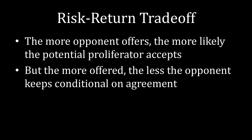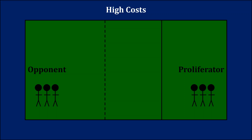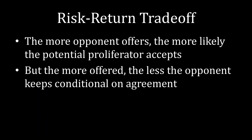But therein lies the rub. The more that the opponent offers, the less the opponent keeps conditional on an agreement. If a potential proliferator actually has high costs, then the opponent could have extracted a lot more for itself. So it's somewhat happy that at least it's getting a deal done, but it's dissatisfied insofar as the opponent, in retrospect, could have taken a lot more for itself and still gotten a deal done with such a high-cost type of potential proliferator. As a result, the opponent has to balance risk versus return when formulating its optimal demand: is it worth making a small offer to extract a lot more for yourself, knowing that it may backfire if the potential proliferator actually had low costs and you suffer the consequences of nuclear proliferation?